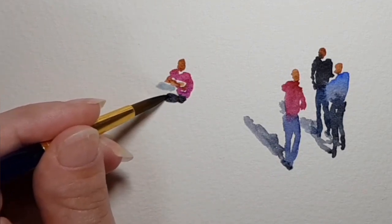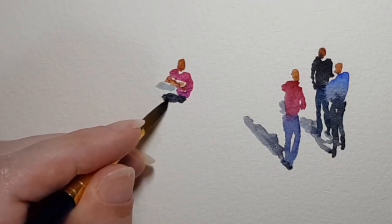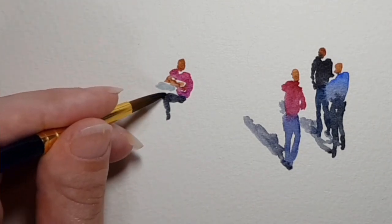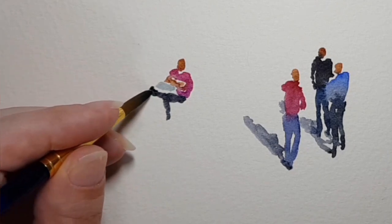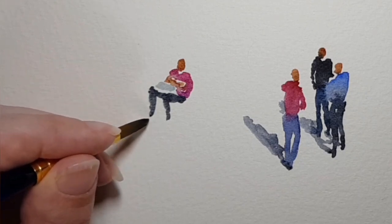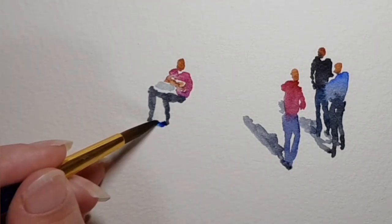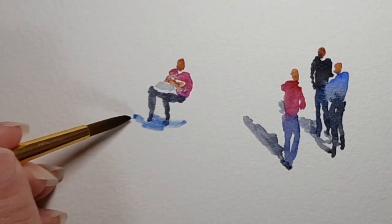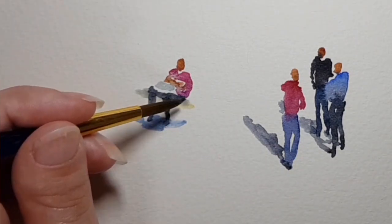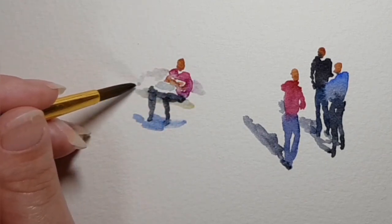The bag covers part of the legs, so I paint around it. When someone is sitting, the distance between the head and the feet becomes much shorter. The legs are in an L shape. I add the shadow underneath the bench and the bench. I think it's good to let the colors of the figure bleed into the bench.